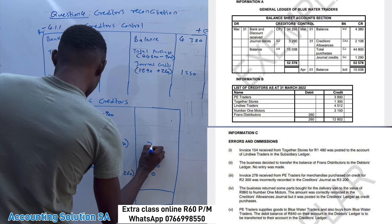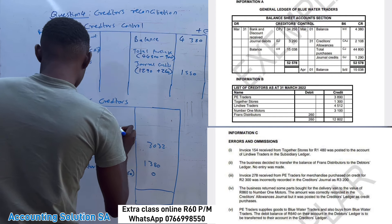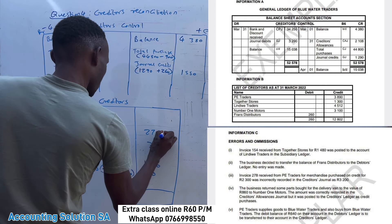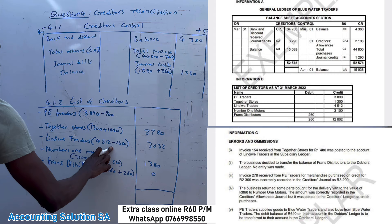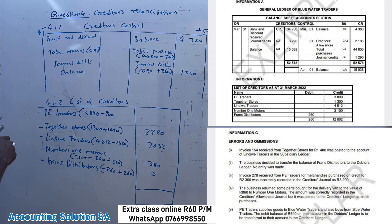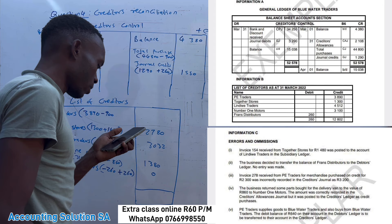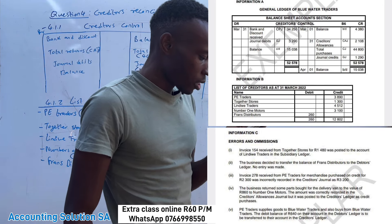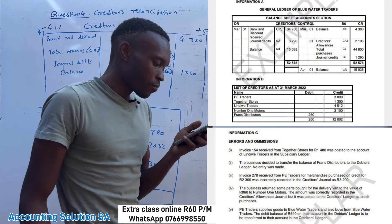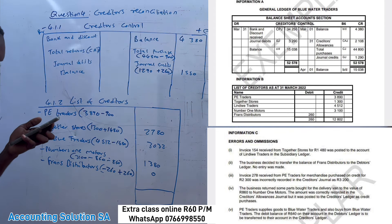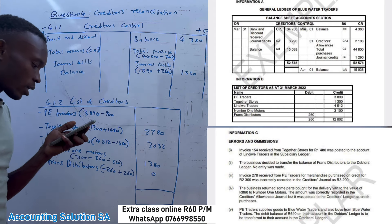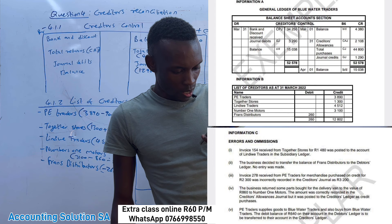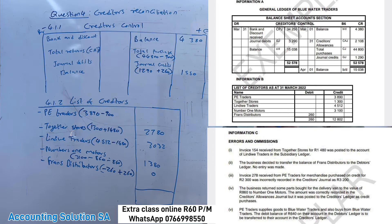For Lindu, we are done — the total is 332. For Together Store we are done — the total is 2,780. Now let's read the last transaction. PE Traders supplies goods to Blue Water Trader and also buys from Blue Water Trader. A debit of 640 in their account in the debtors ledger is to be transferred to their account in the creditors ledger.